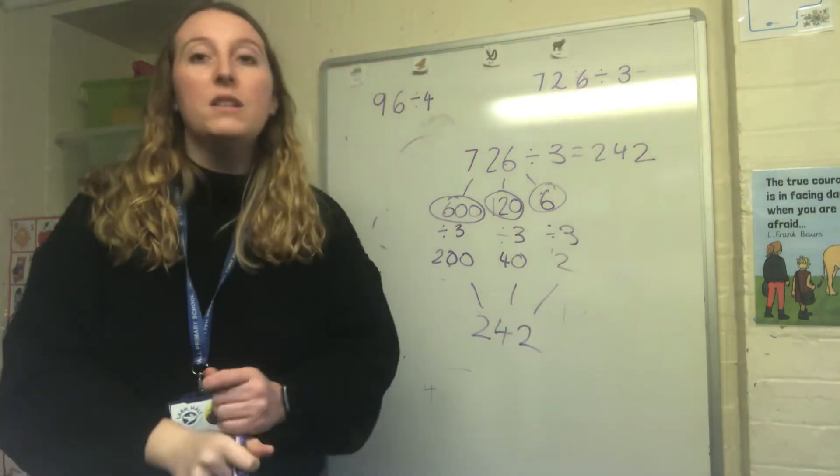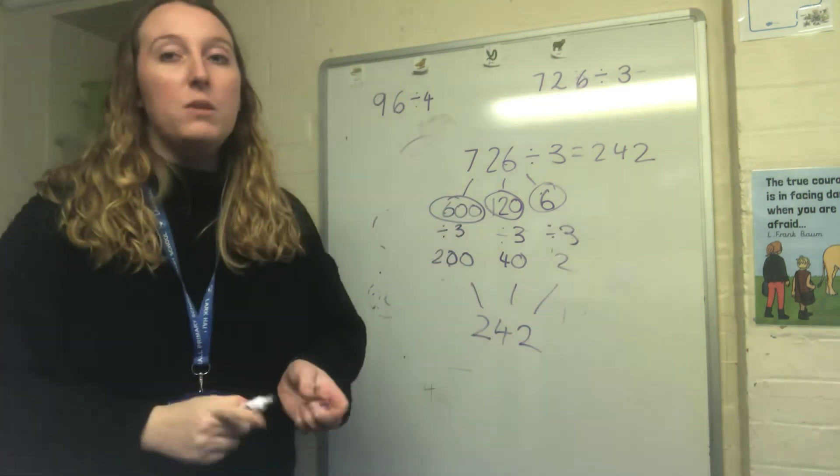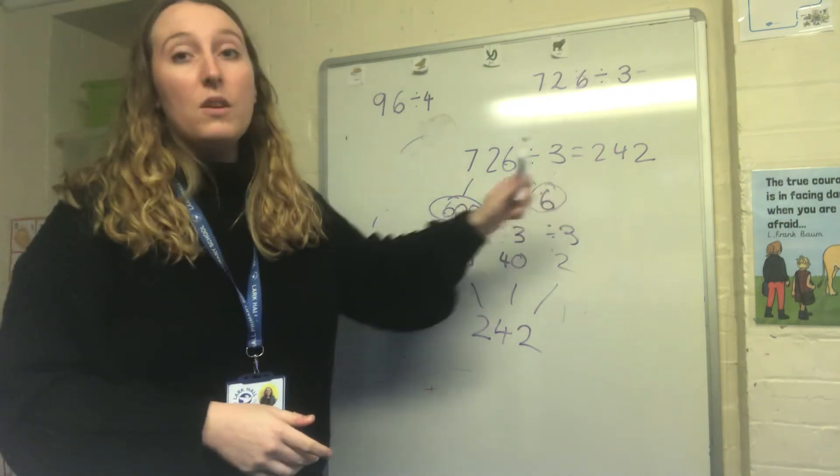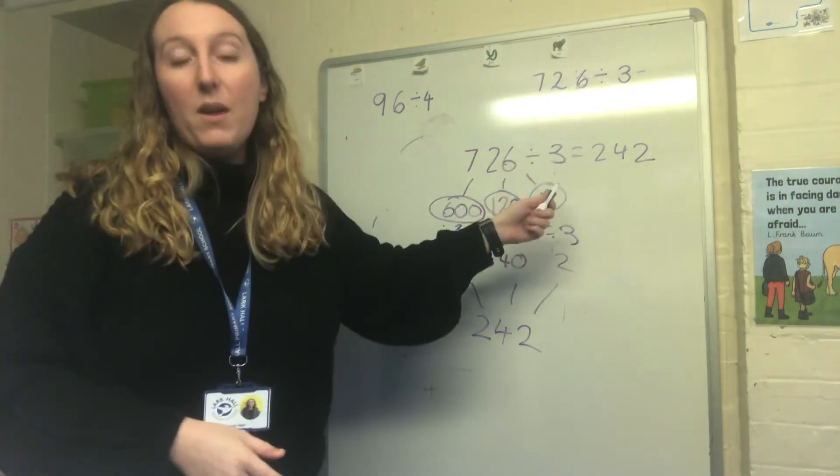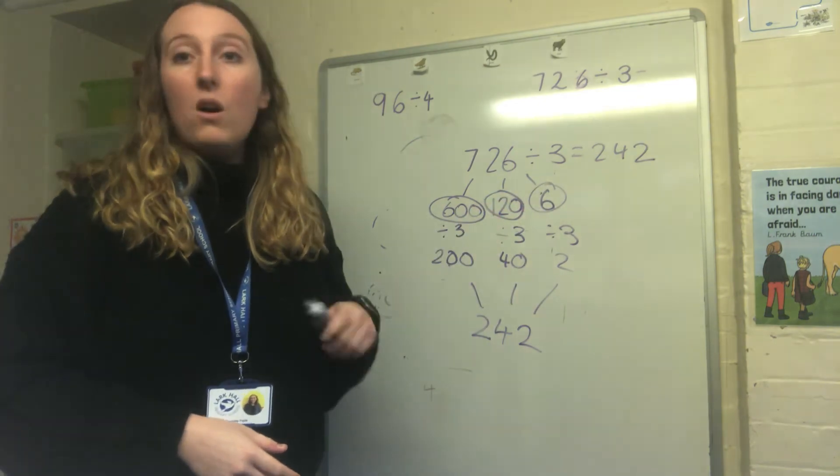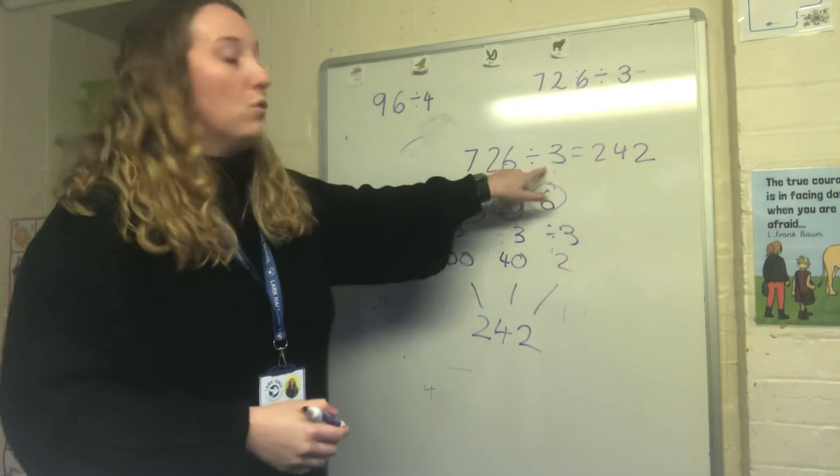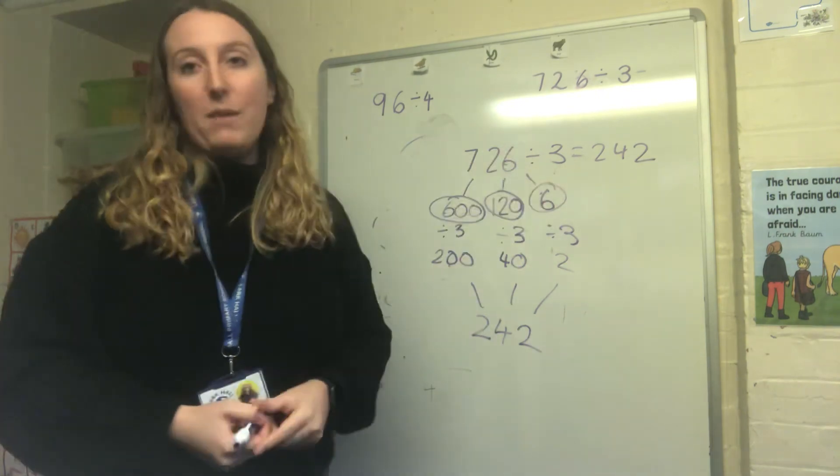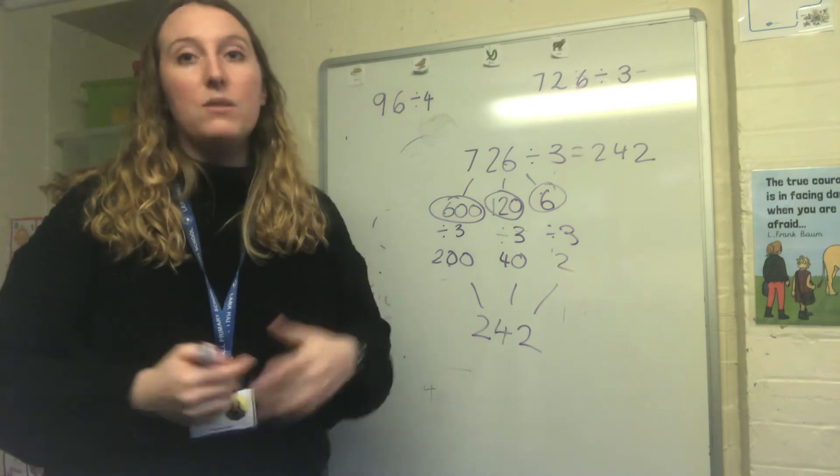So remember when you're partitioning and using this method to help you divide it's really important that the numbers you partition into are easily divided by this number. That's what you need to make sure that you're using because otherwise you can't divide that way. So make sure you're using numbers that can be easily divided by the number you're dividing by. You might have to think about those numbers to help you.